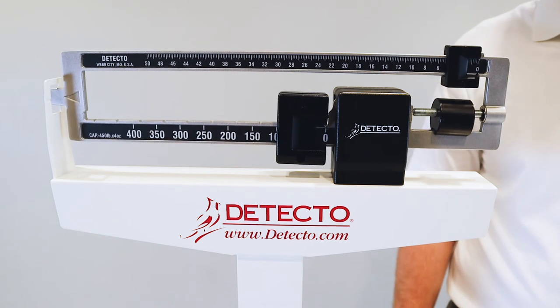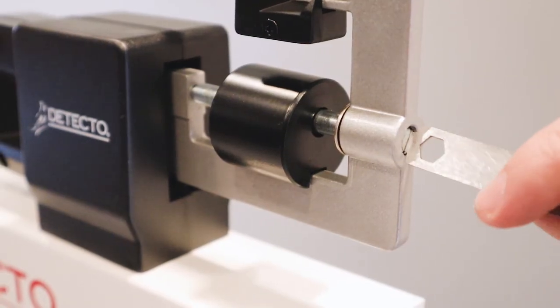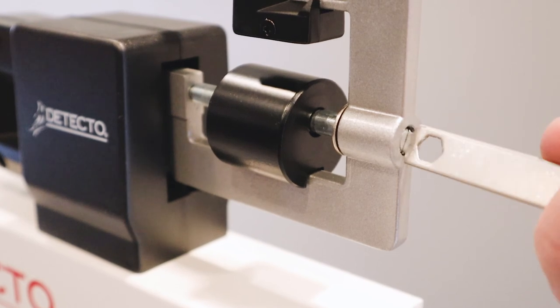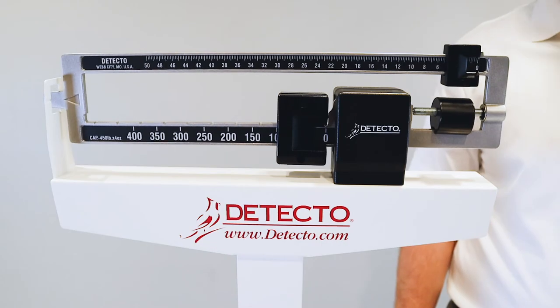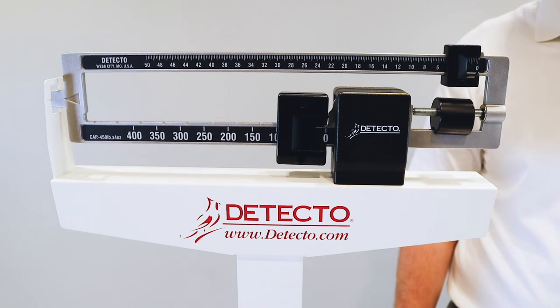If the beam pointer doesn't remain centered, turn the balance screw located on the outside of the way beam to the right or left using a flat head screwdriver until the beam pointer remains centered within the trig loop. Your scale's accuracy is dependent upon this step.